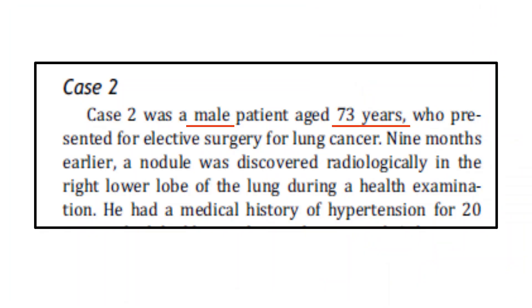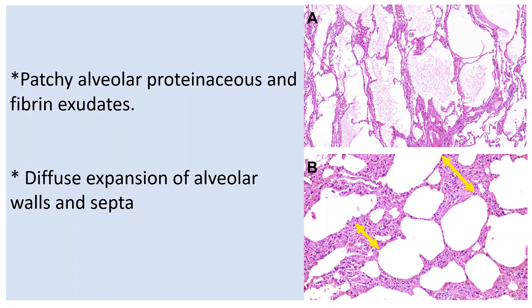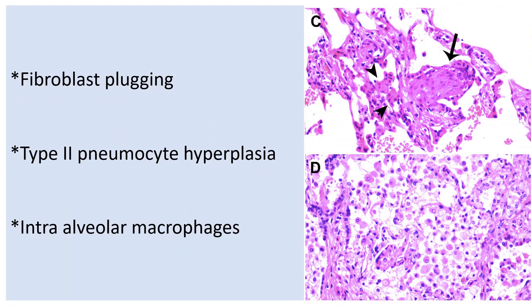The next is a case of a 73-year-old male with a tumour in the lower lobe of the right lung. Histopathology of the lung parenchyma adjacent to the neoplasm showed patchy evidence of proteinaceous and fibrin exudates. There was diffuse thickening of the alveolar walls consisting of proliferating interstitial fibroblasts and type 2 pneumocyte hyperplasia. Focal fibroblast plugging, highlighted by an arrow mark, was seen. Multinucleated giant cells were again noted within the air spaces. These indicate varying degrees of the proliferative phase of diffuse alveolar damage. Some areas showed abundant alveolar macrophages along with type 2 pneumocyte hyperplasia.